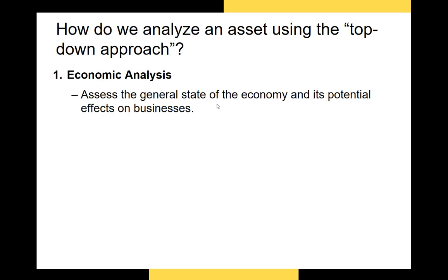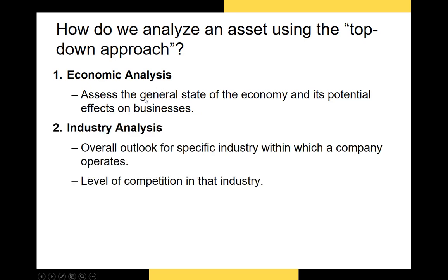There are really two ways in which we perform security analysis. In this video I'll be describing the top-down approach, which is pretty straightforward. We start with a very broad analysis of macroeconomic conditions — that involves economic analysis. So what we're going to do is analyze the overall state of an economy and its potential effect on the businesses in that economy. If we determine that the economy is going to be growing, we move to the next level of analysis: industry analysis.